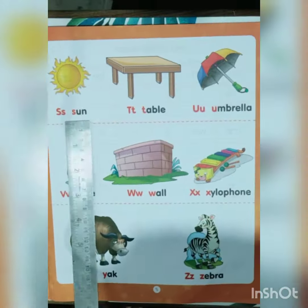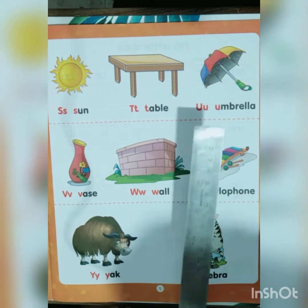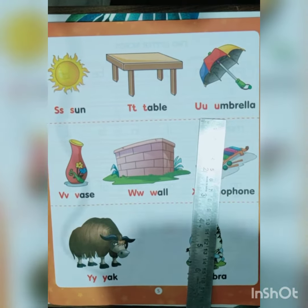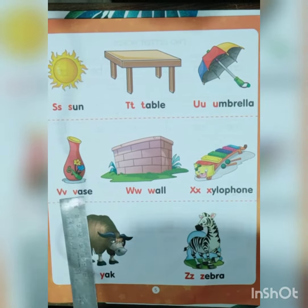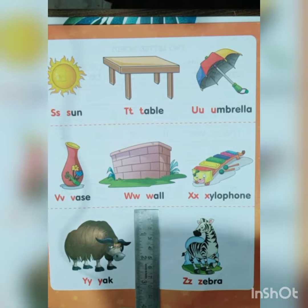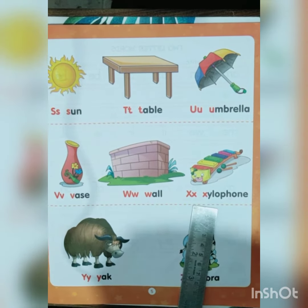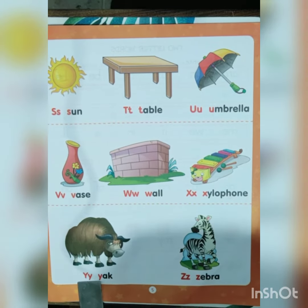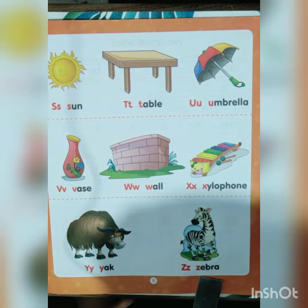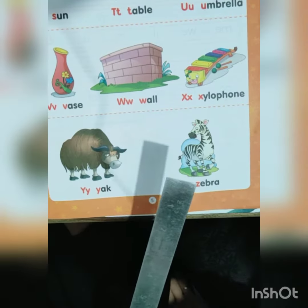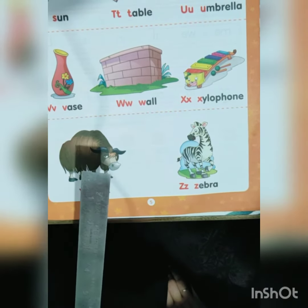S for Sun, T for Table, U for Umbrella, V for Vase, W for Wall, X for Xylophone, Y for Yag, Z for Zebra. Repeat this concept 4 to 5 times.